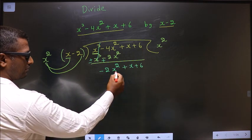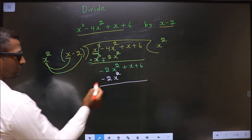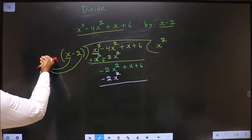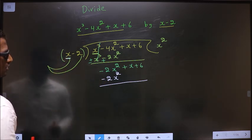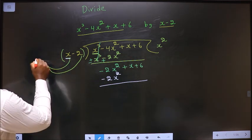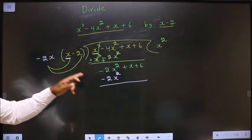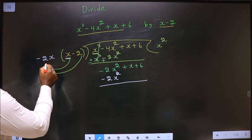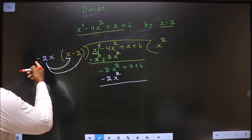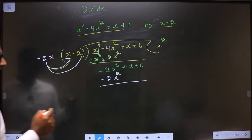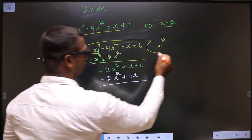Now here you have minus 2x square. Below this also you should get minus 2x square. Here I have x. This should be multiplied with what to get minus 2x square? This should be multiplied with minus 2x. Minus 2x into x is minus 2x square. When you are multiplying to this, you should also multiply to the other term, that is minus 2. So this into minus 2 will be plus 4x. Now this is your second term of the quotient.